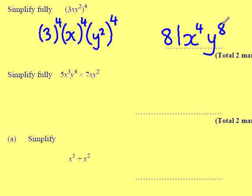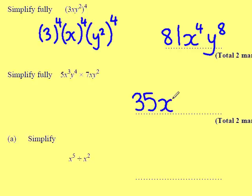Question 6. Simplify fully: 5X cubed Y to the power of 4 multiplied by 7XY squared. I multiply each component separately. Multiply the numbers first: 5 times 7 is 35. X cubed times X is X to the power of 4. Y to the power of 4 times Y squared is Y to the power of 6. Simplify X to the power of 5 divided by X squared — when I divide I take them away — leaving X to the power of 3.